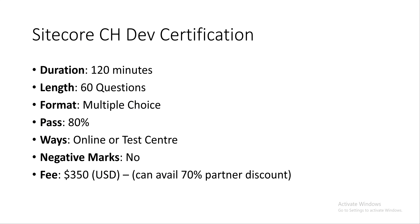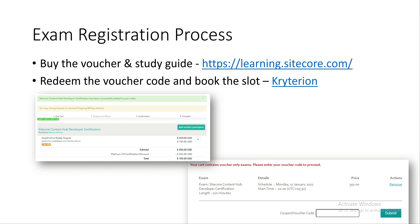If you work for a partner company, you can avail a 70% discount. The registration process for this exam is a little different compared to the normal Sitecore developer exam. You buy the voucher at learning.sitecore.com, then get access to a study guide with in-depth topics covered in the certification exam, relevant links, and around 10 practice questions. You also receive a voucher code to redeem at the Criterion Web Assessor, where you schedule the exam.